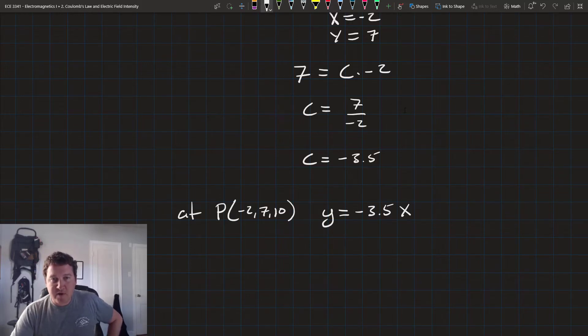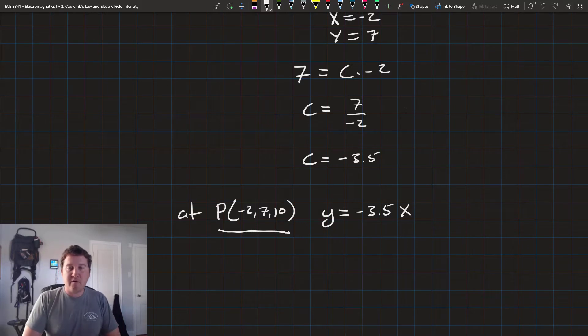The streamline of the electric field that passes through this point is given or described by the equation y equals minus 3.5x. And there we go.